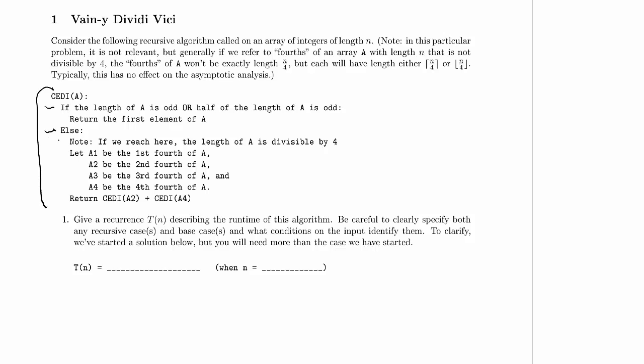Otherwise, and then it's got a little note here. This is pseudocode, so if it says note, that's a comment. It says if we reach here, the length of A is divisible by 4. So is that true?